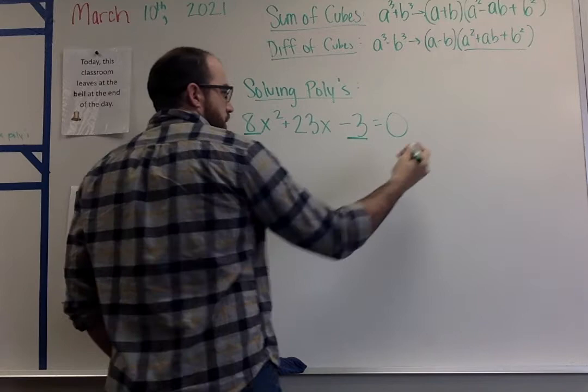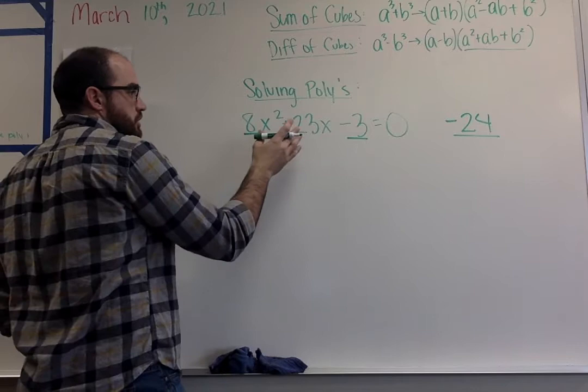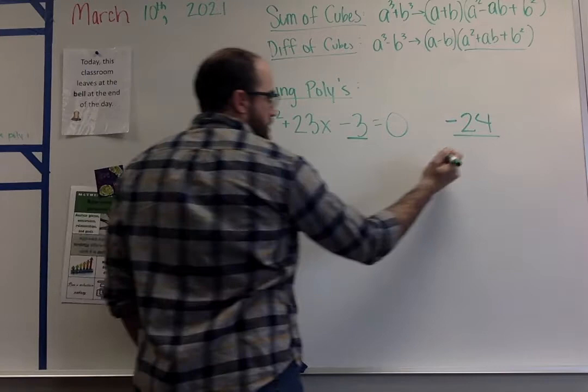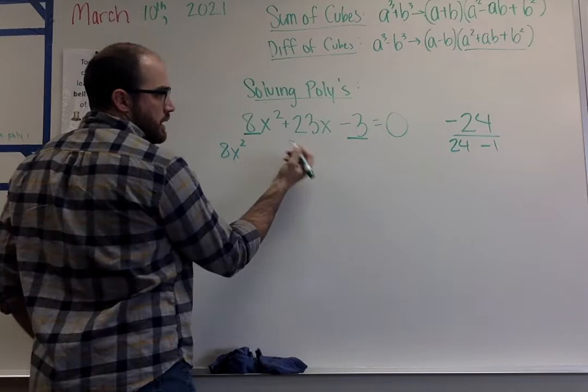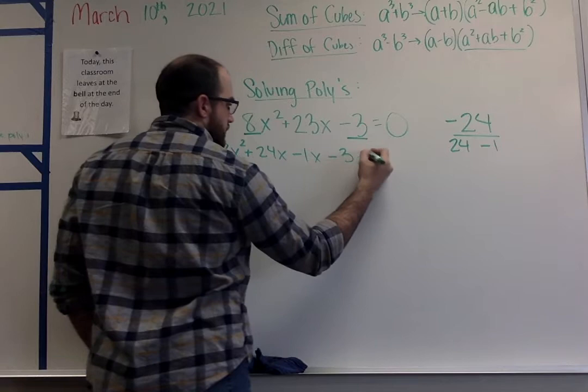So initially, you're going to look through and see is there anything that I can factor out. Right now, there's nothing that factors out because there's no common factor with our 3 and our 8, or our 23. So I'm going to multiply my A times my C, so 8 times our negative 3 gets me negative 24.